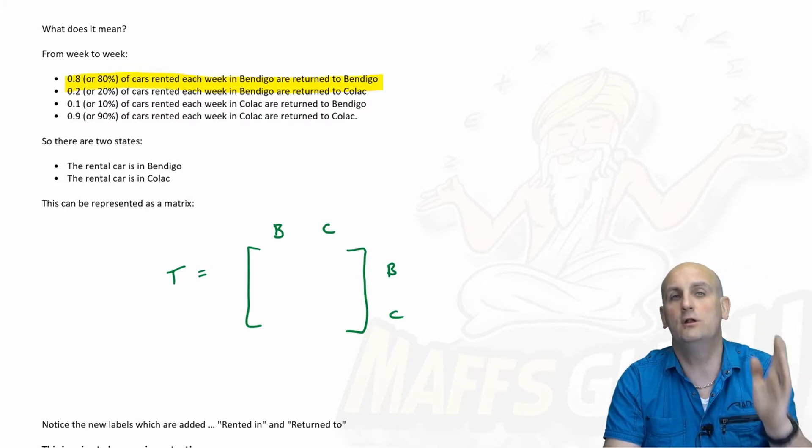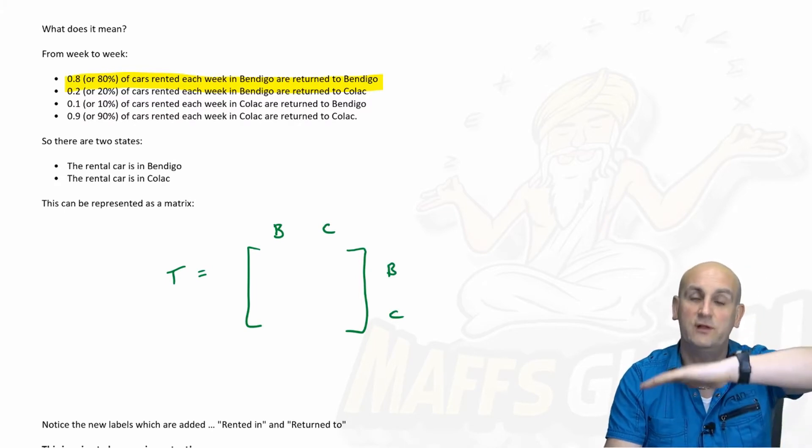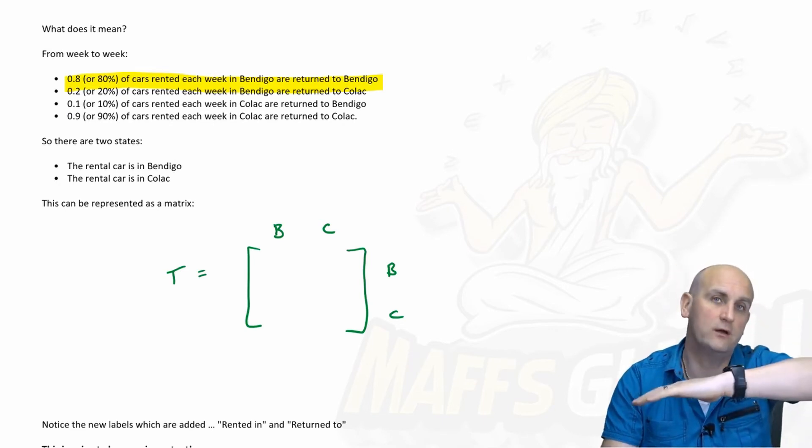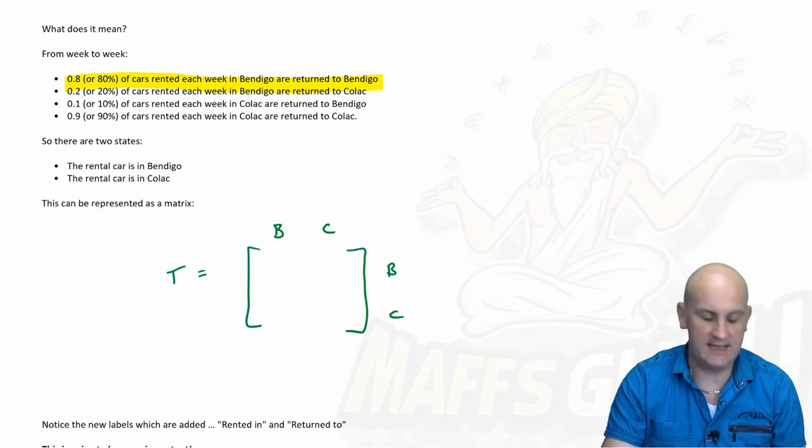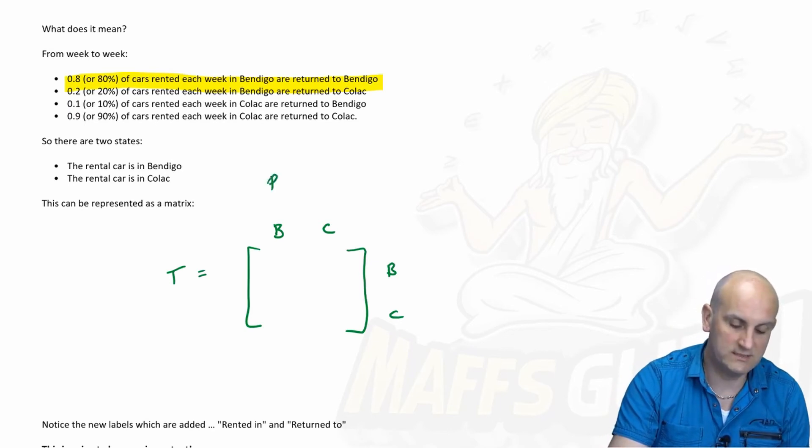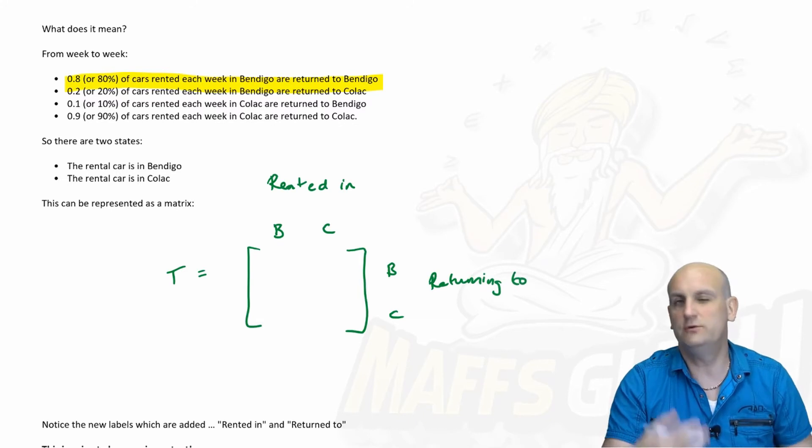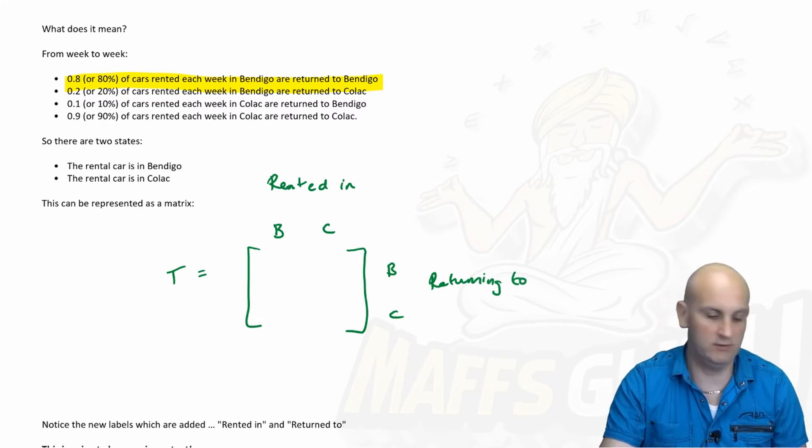Now the rows and columns also have to stand for something. And there's some sort of start condition and end condition. So normally the start are for our columns and the rows are the end condition. And so we know that we start the week by renting our car in Bendigo and returning it to somewhere else. So make sure you keep those distinctions really, really important.